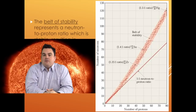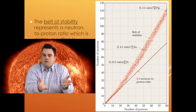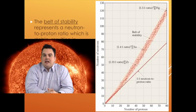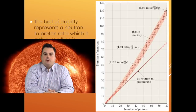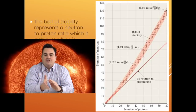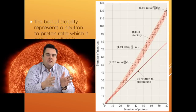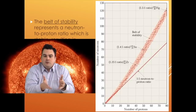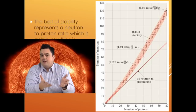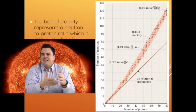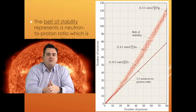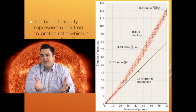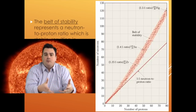The belt of stability represents a neutron-to-proton ratio which is stable, resulting in nuclei that do not decay. Anything outside of the belt of stability has a neutron-to-proton ratio which is unstable, resulting in nuclei that do decay. Looking at the graph, the y-axis shows number of neutrons and the x-axis shows number of protons. The faded red line with red dots is our belt of stability. The solid red line represents a 1-to-1 neutron-to-proton ratio. For lighter elements near the origin, the belt follows that 1-to-1 ratio, but for heavier nuclei it veers away, meaning we actually need more neutrons to maintain stability.